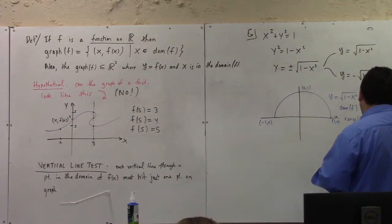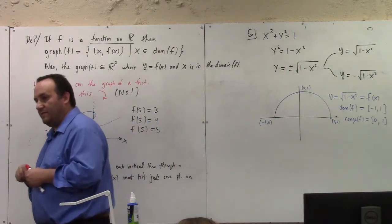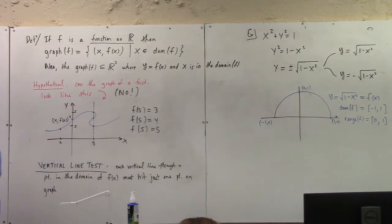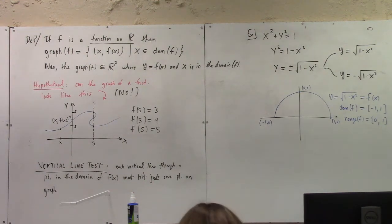So the range would be 0 included all the way up to 1. I can get half of a circle as the graph of a function, right? And I can get the other half of a circle as the graph of another function.